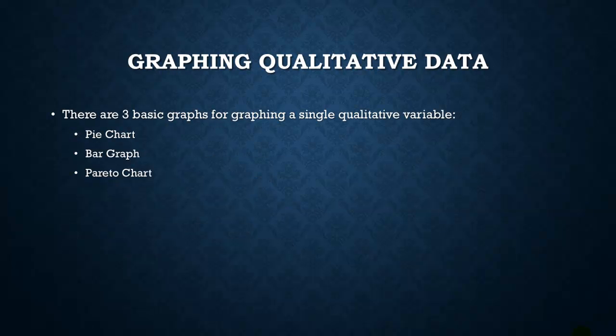After creating a frequency table, there are three types of graphs we can use: a pie chart, a bar graph, or a Pareto chart — the Pareto chart really just being a special kind of bar graph. Let's look at pie charts first, because they're very popular, even though they're often misused.